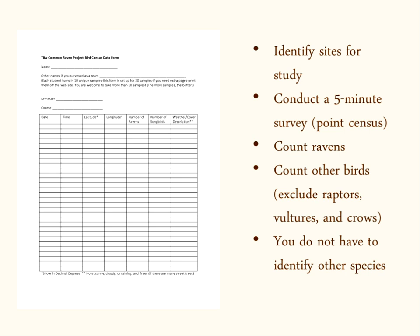You'll fill out this form, indicating the date and the starting time. You're going to identify latitude and longitude, which I'll show you how to do in later slides. You'll count the number of ravens and the number of other birds — we're using 'songbirds' as a general term. You'll also want to indicate the weather, the kind of environment you're in, and how much cover there is: is it dense forest, landscape trees in an urban setting, shrubs, open country, and so forth.